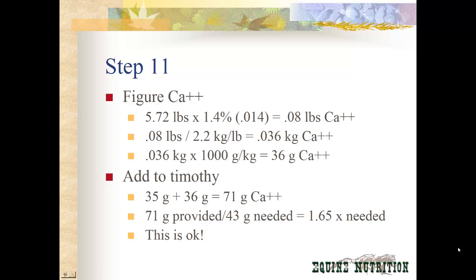Now we figure for calcium. We've determined we need 5.72 pounds of alfalfa hay to meet his protein requirements, and we're going to see if this will also meet his calcium and phosphorus needs. 5.72 pounds of hay times 1.4% calcium gives us 0.08 pounds of calcium; divide by 2.2 kilograms per pound — 0.036 kilograms — then multiply by 1,000 to get 36 grams of calcium. Adding that to the 35 grams from Timothy pellets gives 71 grams of calcium total. 71 grams provided divided by 43 grams required equals 1.65 — so he's getting 1.65 times more than he needs. This is pretty good.